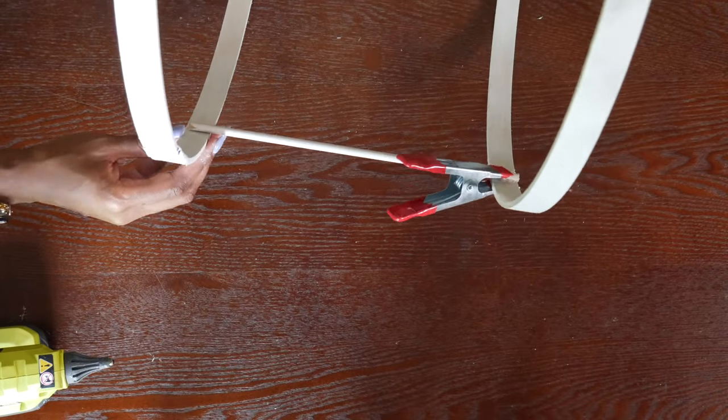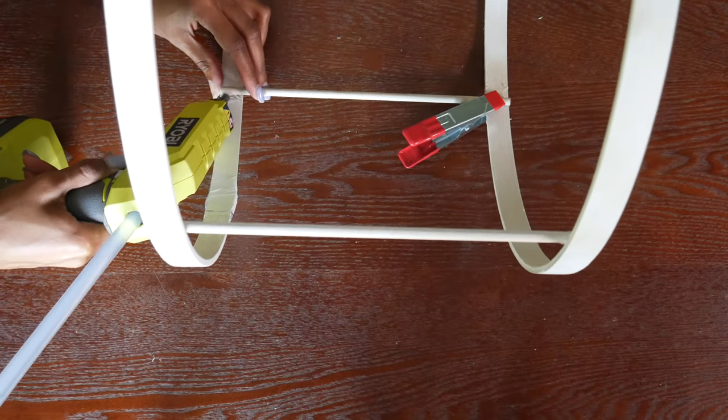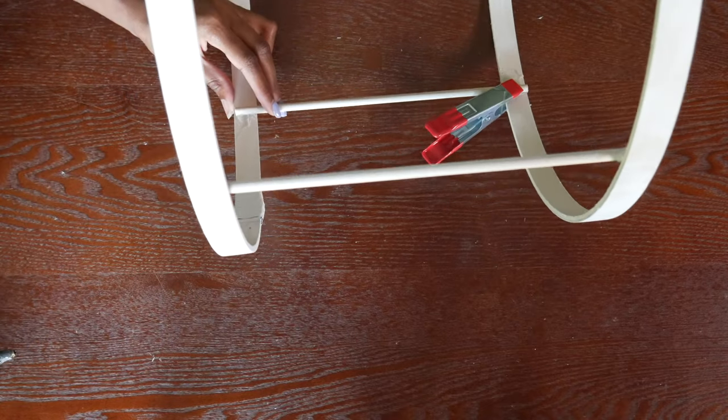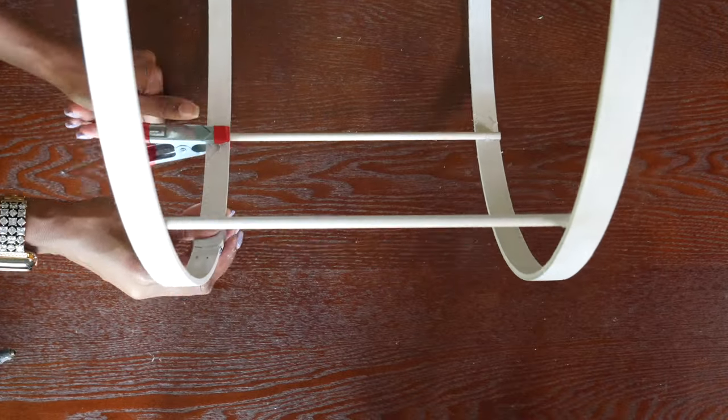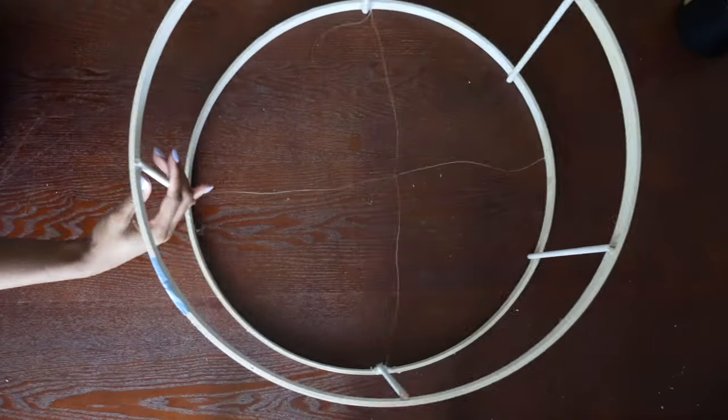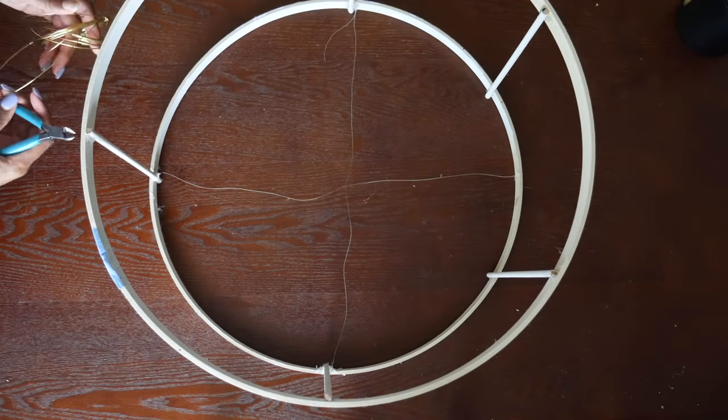I would also recommend you use some clamps. Since this is a circle essentially, it will roll, so I used my clamps to not only keep the stuff in place while curing, but also to stop the lampshade from going all over the place.